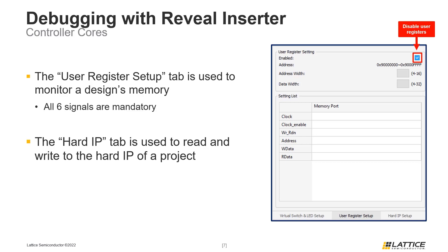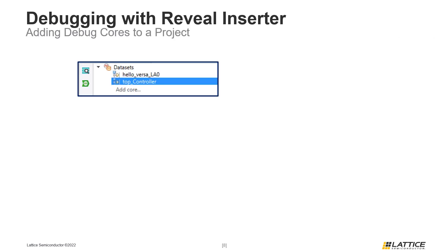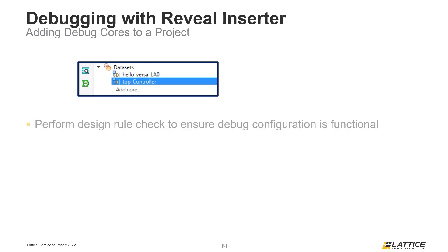Now that we've discussed the basics of Reveal's debug cores, we will review the process for adding them to a project. Before adding the cores, users should first perform a Design Rule Check (DRC) to ensure there will be no issues. This is important because after debug cores are added, the project will have to be synthesized, mapped, and placed and routed again, so any design issues will hinder this process.